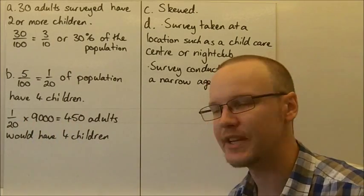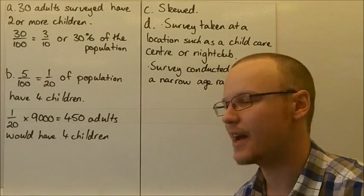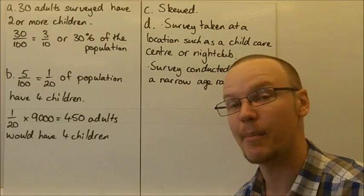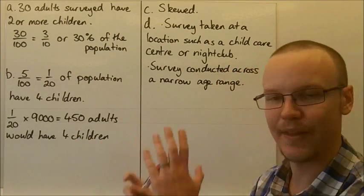And that's equal to 450 adults. So we'd expect 450 people, 450 adults in that population of 9,000 people to have four children, based on that other survey.